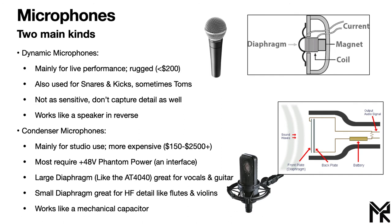Looking at this diagram, the 48-volt phantom power is represented by the battery. What this 48 volts does is push charge onto the plates of a capacitor. The backplate of the capacitor is fixed, while the front plate is free to move back and forth. As sound waves enter the microphone, they push against the front plate — the diaphragm — moving it closer to or further from the backplate. Since capacitance is inversely related to the distance between the two plates, this change in distance creates a change in voltage, which is measured as the audio signal and converted into an audio file by your audio interface.